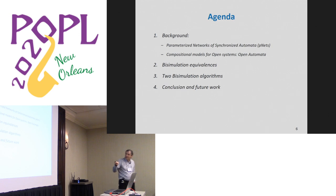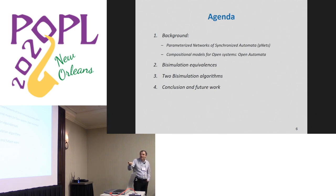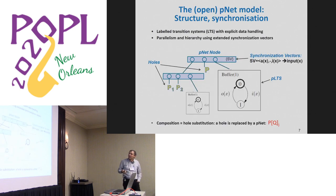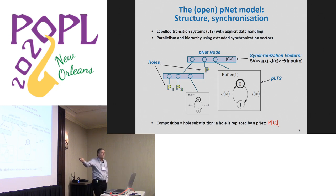I'll give a short, not too technical, description of my PNET formalism and its semantics, which I call open automata. I'll show how to define equivalences on these systems, and then the main work is to propose algorithms that can be implemented in practice. In one slide: the PNET model has automata — label transition systems strictly — where actions are expressions with variables. Everything is kept symbolic, and you can have state variables in your system.